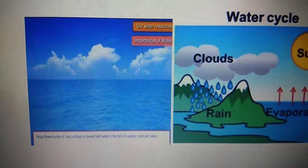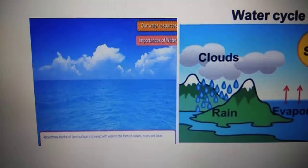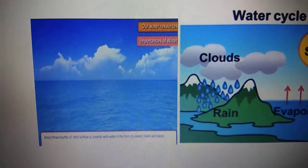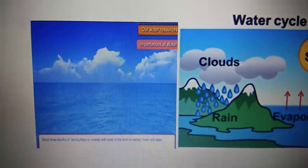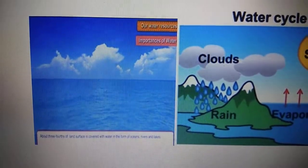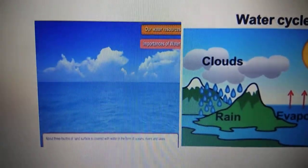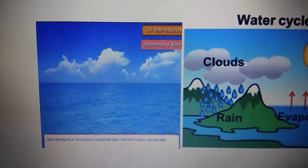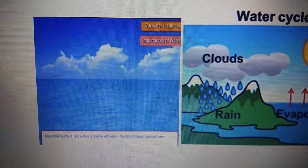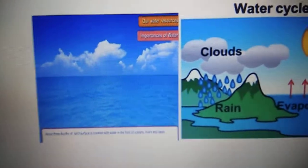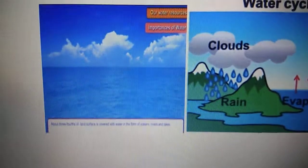About 97% of the water present on the earth is found in seas and oceans, which is saline in nature. Out of the remaining 3% of fresh water, 2% is found in the form of ice sheets and glaciers and cannot be used for consumption. So only 1% of fresh water is available for human use.